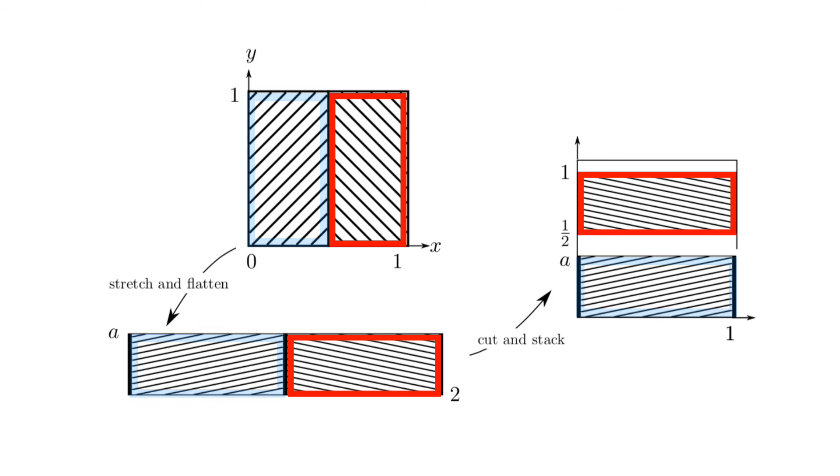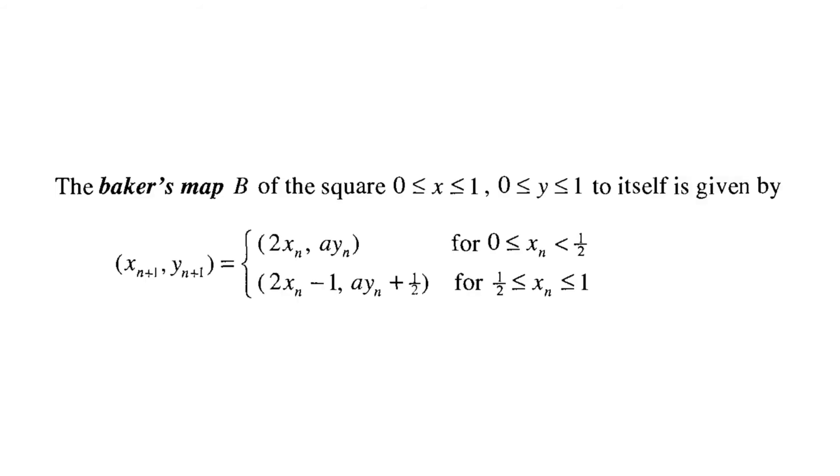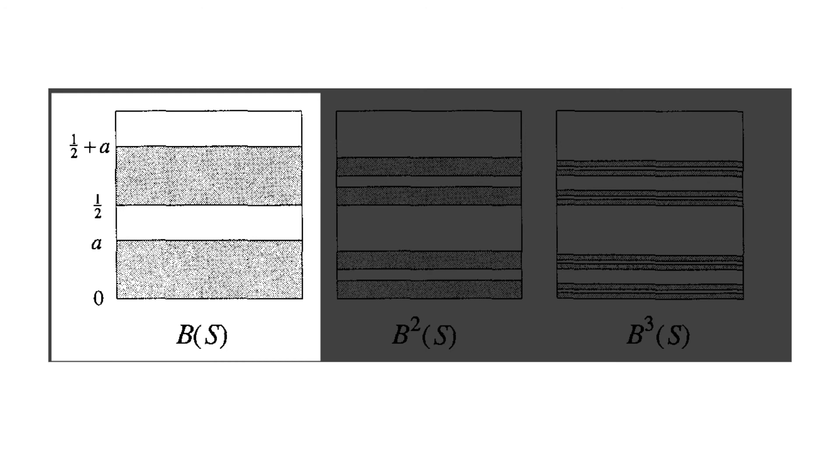These two actions form one iteration of the map. So action one, stretch and flatten. Action two, cut and stack. The question is to now ask yourself what happens when you do this over and over. As we said earlier, it isn't necessary to examine the analytical details of the map. But if you wanted to, you could write out the precise details. Here's the map as shown in Strogatz's book, which he calls B.